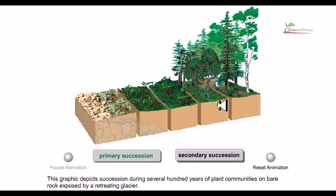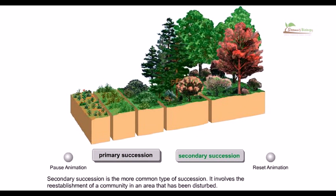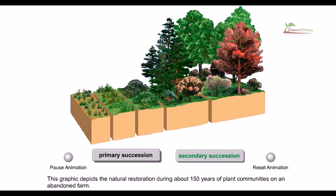In secondary succession, this is the more common type. It involves the reestablishment of a community in an area that has been disturbed. This graphic depicts the natural restoration during 150 years of plant communities on an abandoned farm.